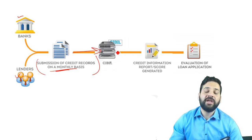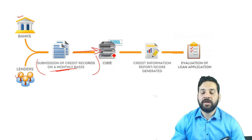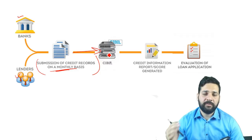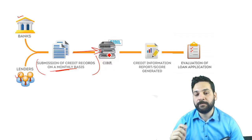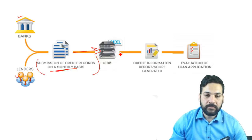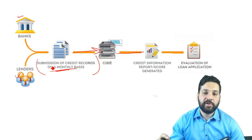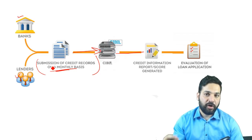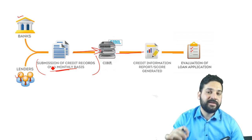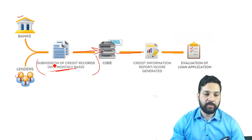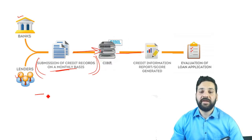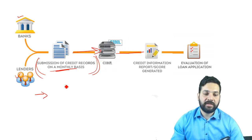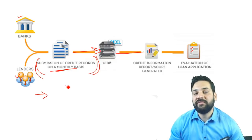Whenever a customer or borrower comes to a bank or lender with a fresh application, the bank or lender will check the credit history of that person in CIBIL's database. Based upon the monthly records submitted, CIBIL gives a credit score to each and every individual — ranging from 300 to 800.